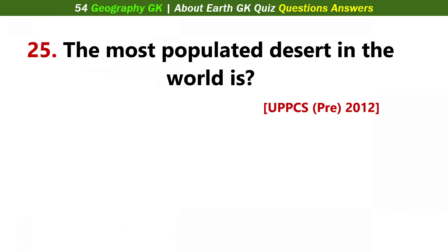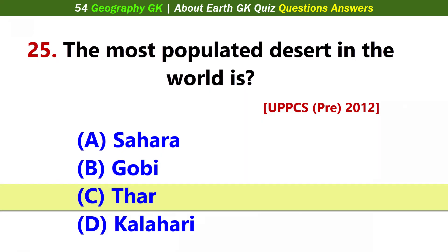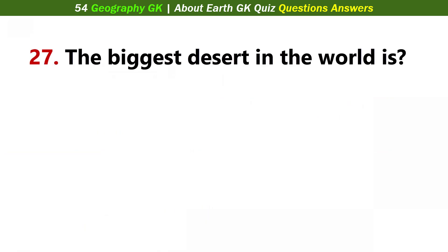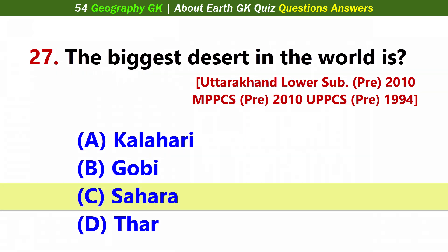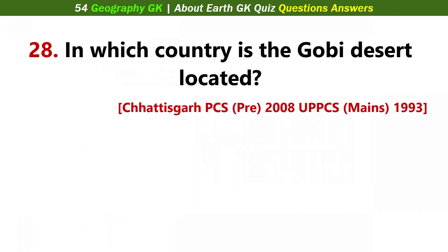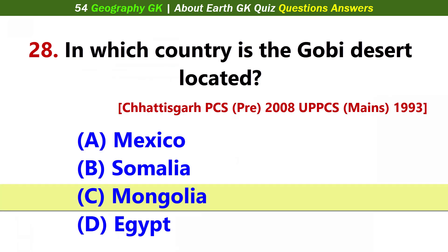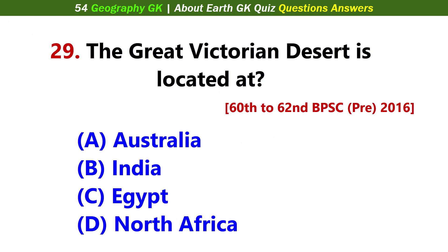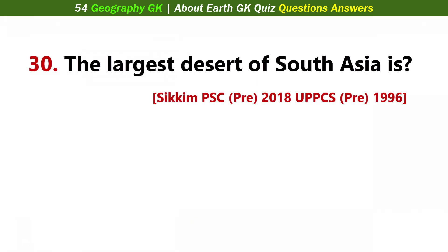The most populated desert in the world is... Answer C: Thar. Taklamakan desert lies in? Answer B: China. The biggest desert in the world is? Answer C: Sahara. In which country is the Gobi desert located? Answer C: Mongolia. The Great Victorian desert is located at? Answer A: Australia.